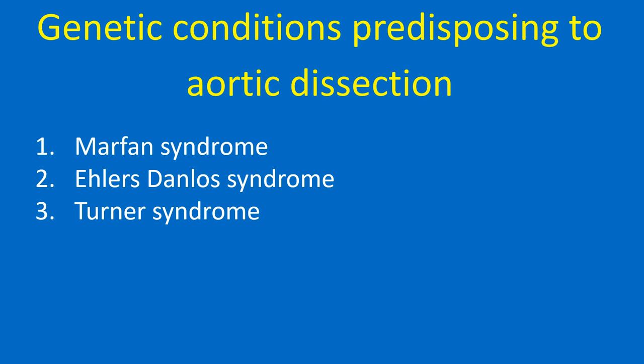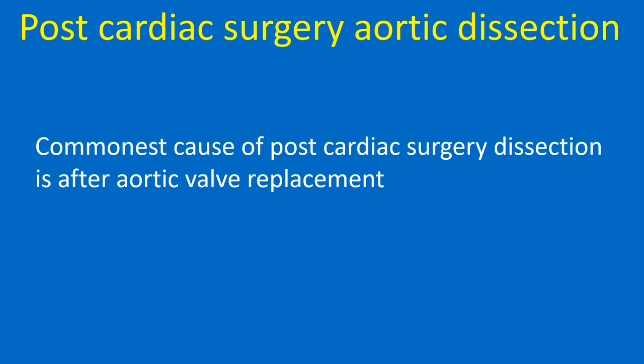Genetic conditions predisposing to aortic dissection include Marfan syndrome, Ehlers-Danlos syndrome, and Turner syndrome. Post-cardiac surgery aortic dissection: the commonest cause is after aortic valve replacement.